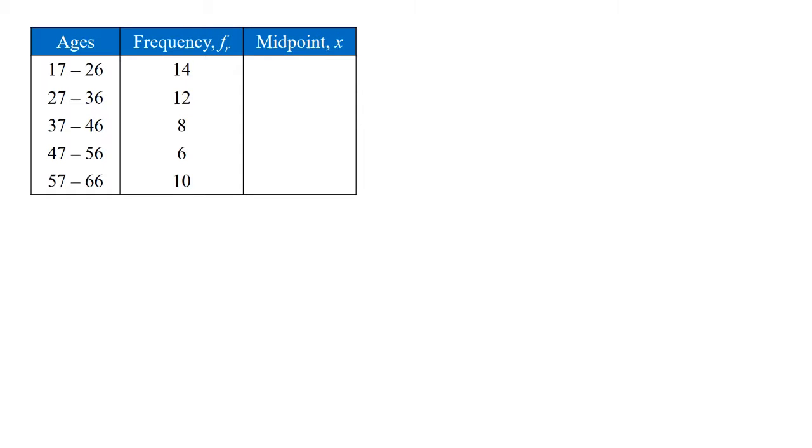We've got group data here representing the ages of different people leaving the cinema. The youngest is 17 years old and the oldest is 66. We can see that the ages are grouped into five categories or groups. You'll notice that the sample size is 50.